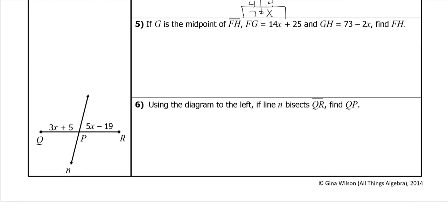All right, again, draw it if it's not drawn for you. Draw it. G is the midpoint of FH, so draw FH first. And then G is the midpoint, meaning that both of these are the same.